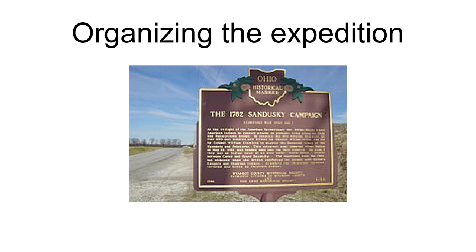Given the daunting nature of the task ahead, many of the volunteers made out their last wills and testaments before leaving. Because this was a volunteer expedition and not a regular army operation, the men elected their officers. The candidates for the top position were David Williamson, the militia colonel who had commanded the Gnadenhutten expedition, and William Crawford, a retired Continental Army colonel. Crawford, a friend and land agent of George Washington, was an experienced soldier and frontiersman, having destroyed two Mingo villages during Dunmore's War in 1774.